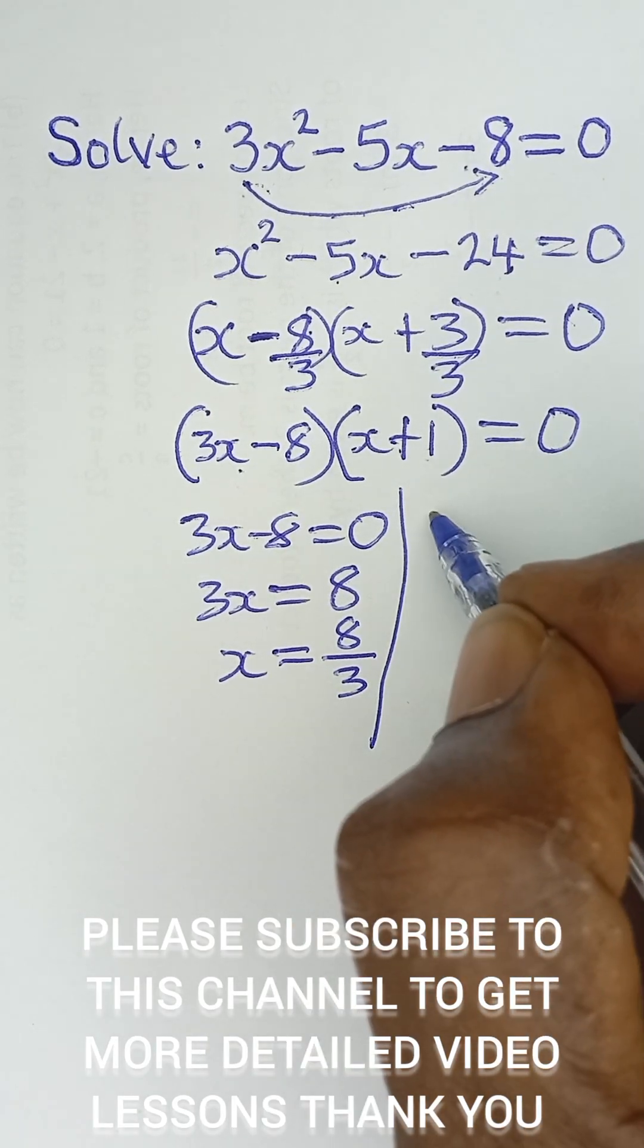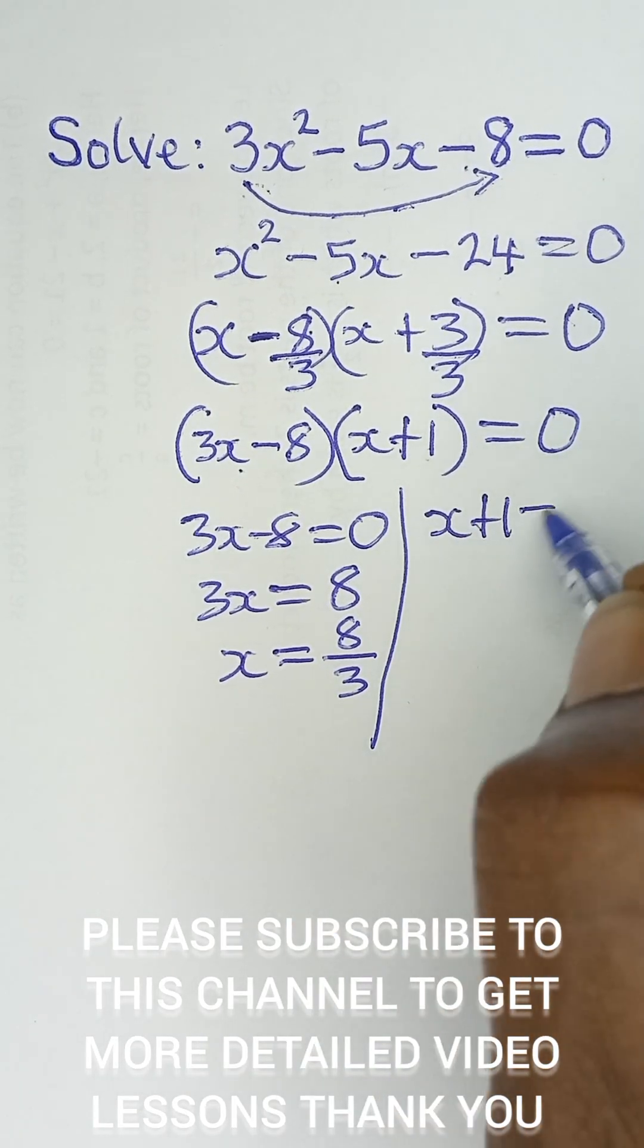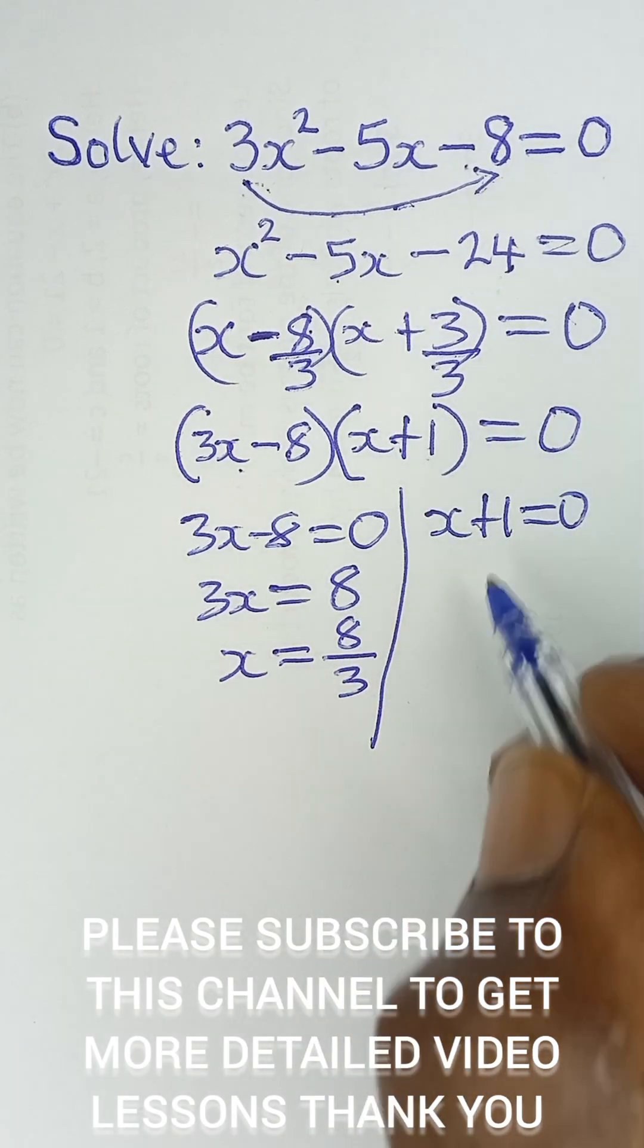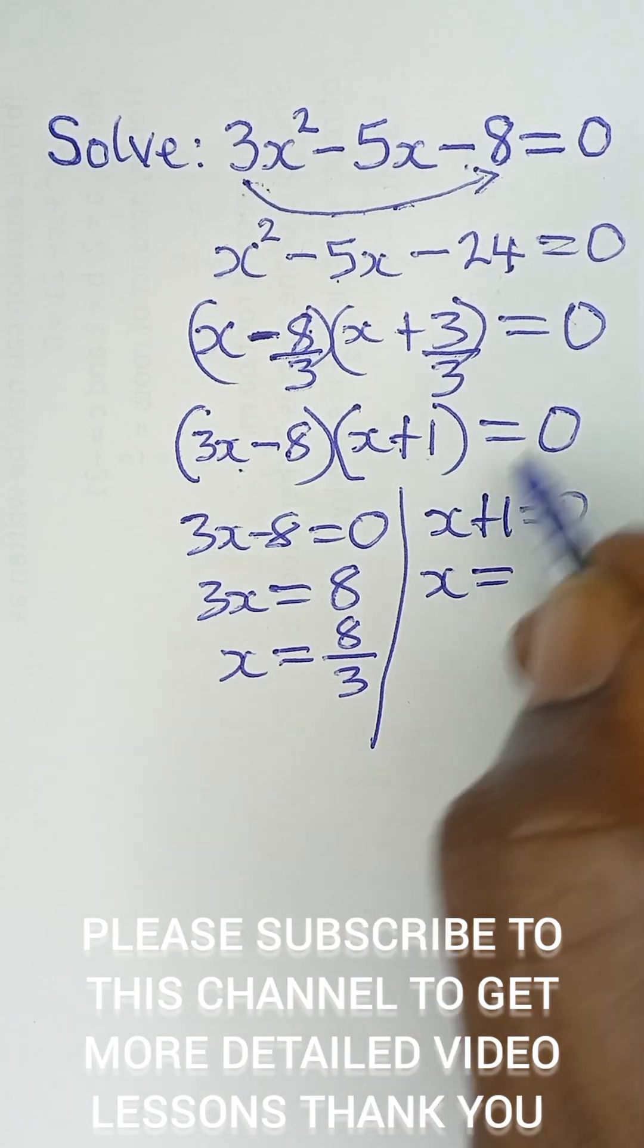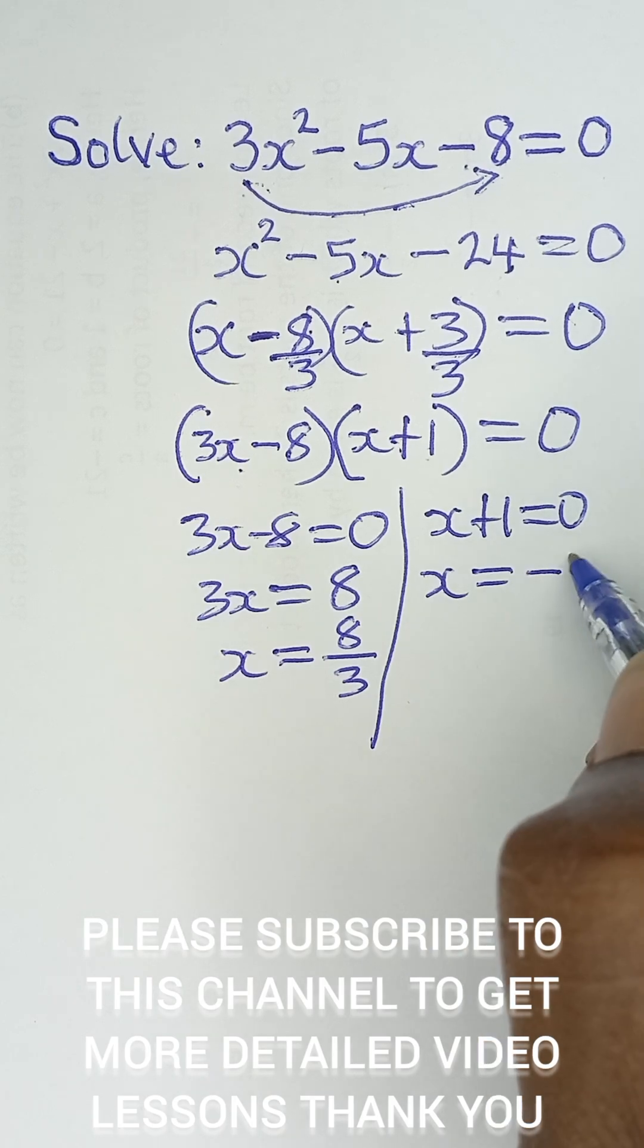Or the other factor becomes x plus 1 equals 0. When we take this and equate it to 0, and then I have x equals, when the positive 1 goes to that side, it becomes negative 1.